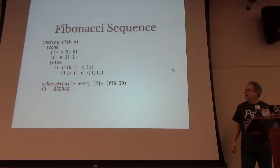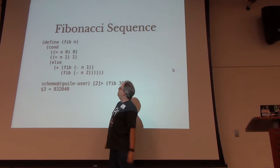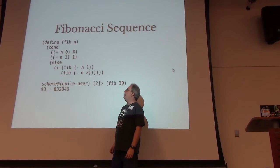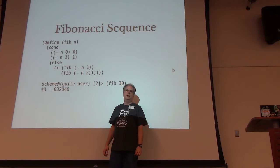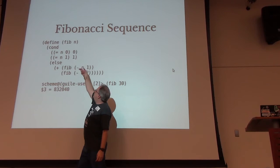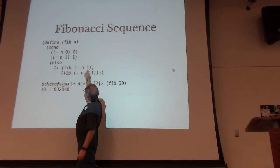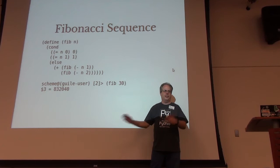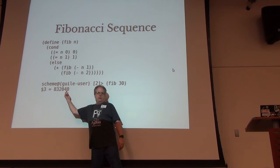The most important code in computing: the Fibonacci sequence. This gets into one of the benefits of Scheme — recursion. MIT used Scheme to teach computer science and recursion because recursion is extremely simple in Scheme. The function: if n equals 0, return 0; if n equals 1, return 1; otherwise return fib(n-1) + fib(n-2). Running that for 30 gives back the answer.